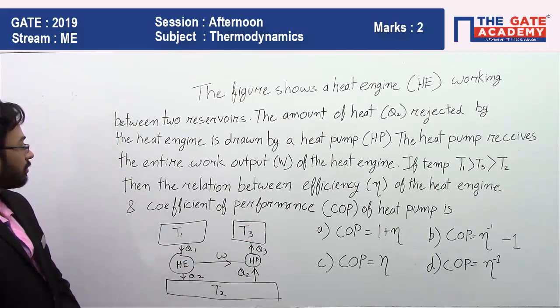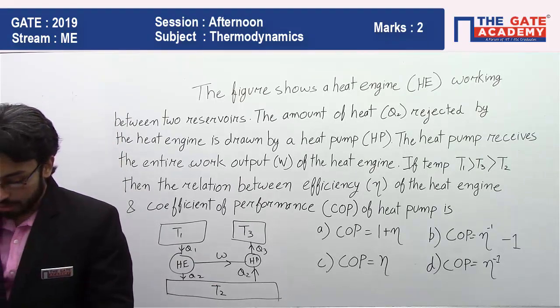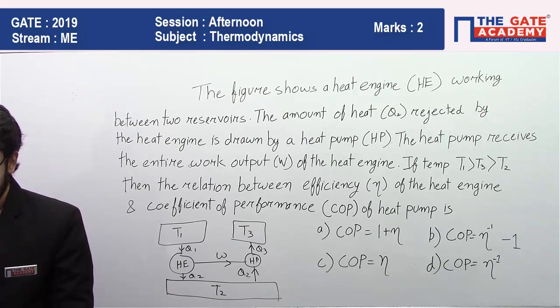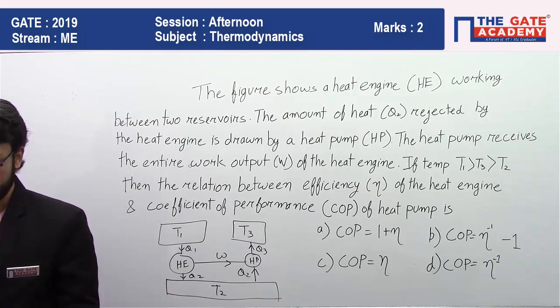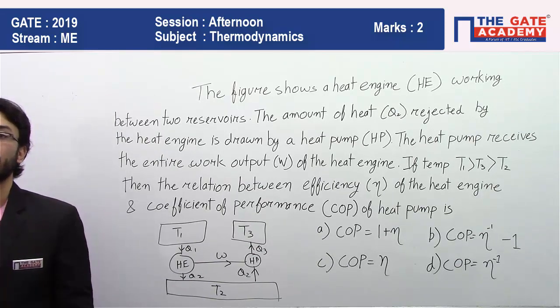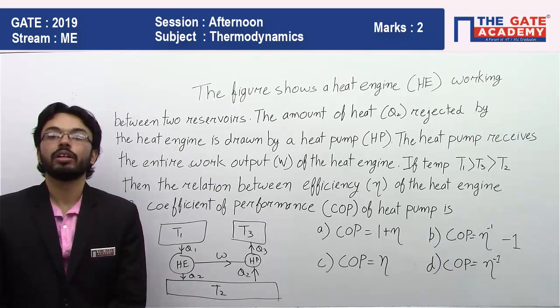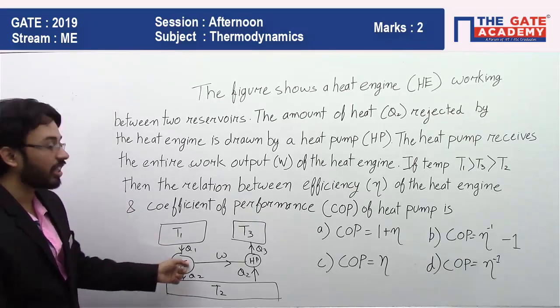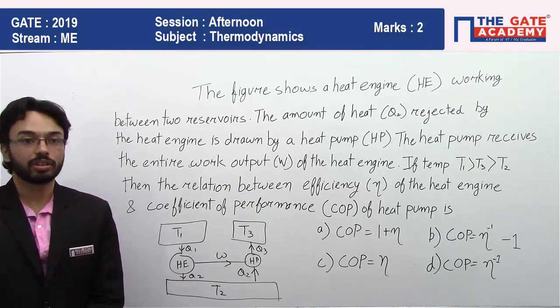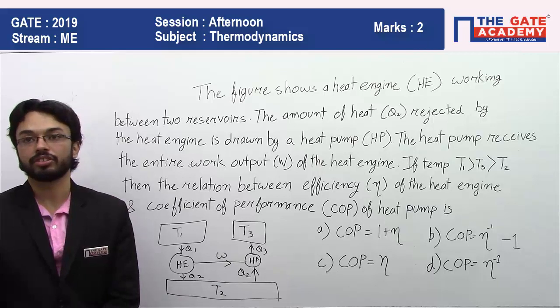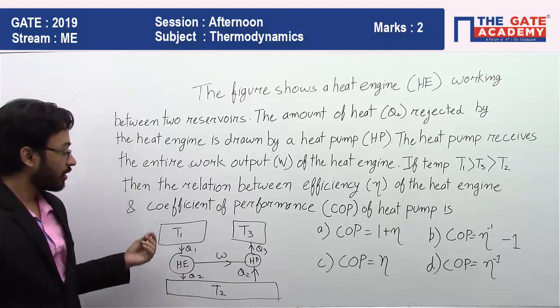The figure shows a heat engine working between two reservoirs. The amount of heat Q2 rejected by the heat engine is drawn by a heat pump. The heat pump receives the entire work output W of the heat engine. If temperature T1 is greater than T3 which is greater than T2, then the relation between efficiency - the most important part - efficiency always belongs to the heat engine.